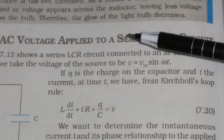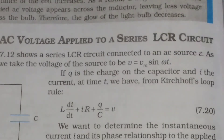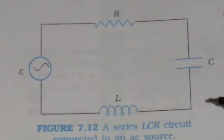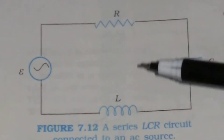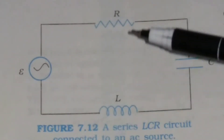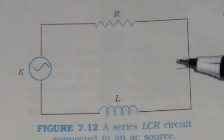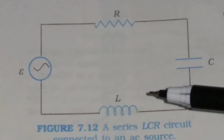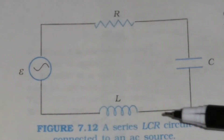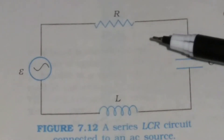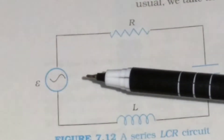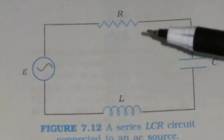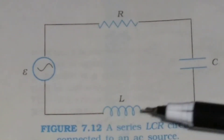AC voltage applied to a series LCR circuit. Consider a series LCR circuit as shown in the figure. This is the inductor, this is the resistor, and this is the capacitor. The three components are connected in series. The AC source voltage E is also connected in series with these three components.